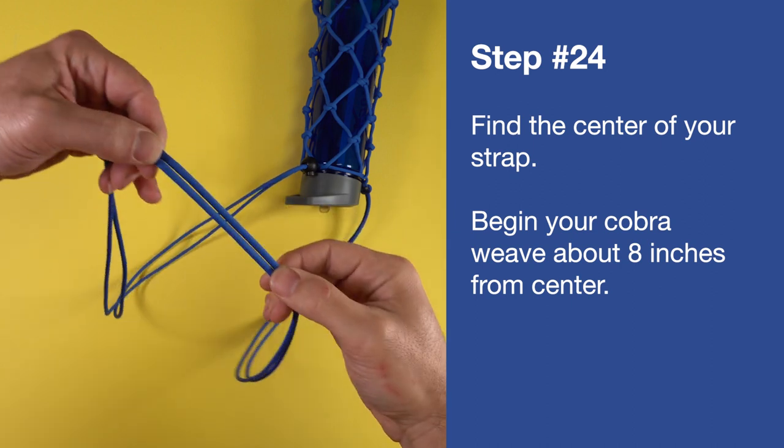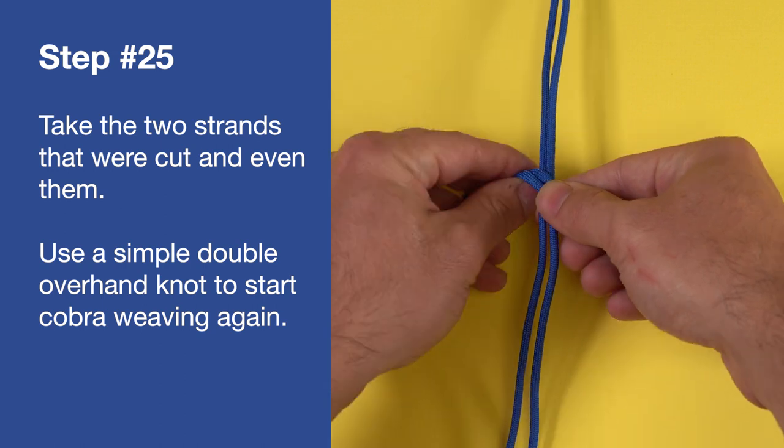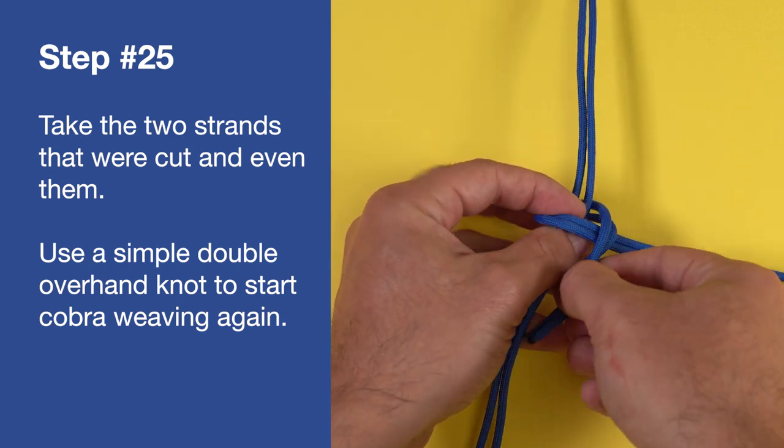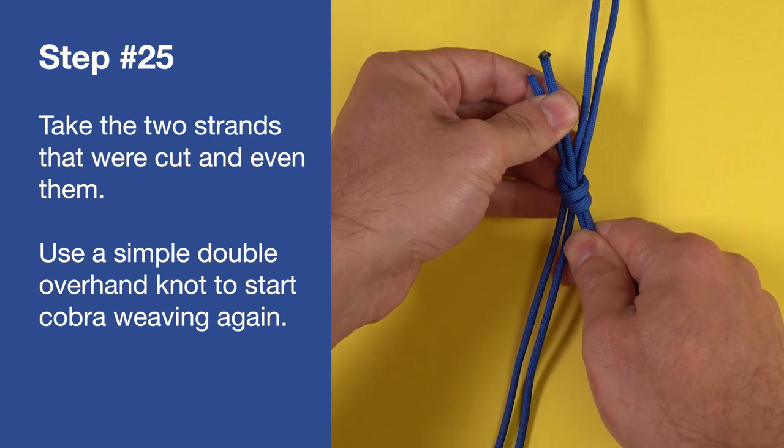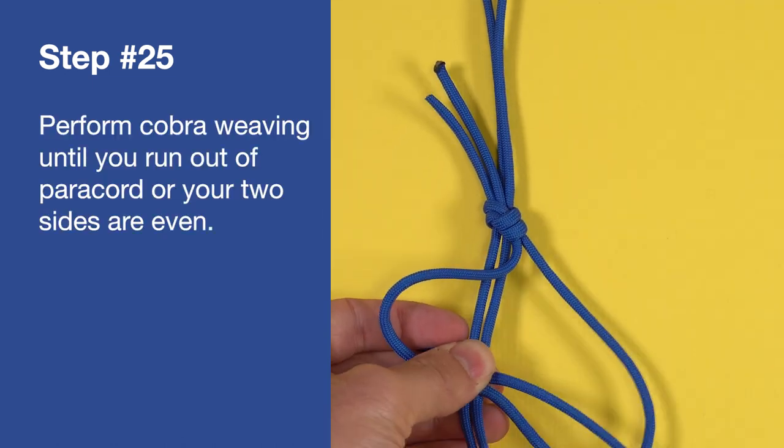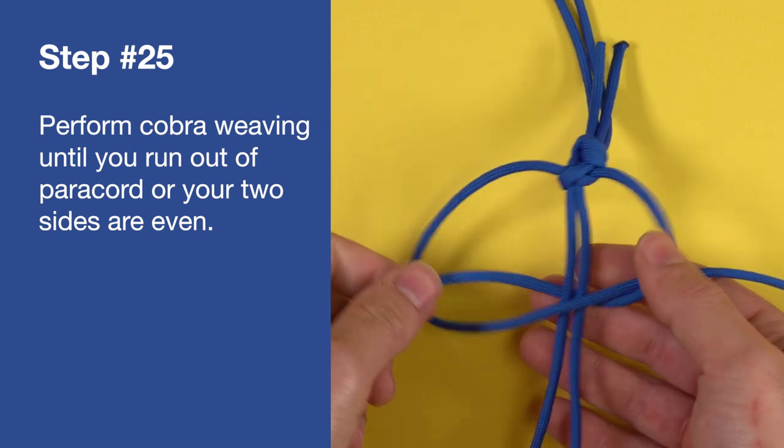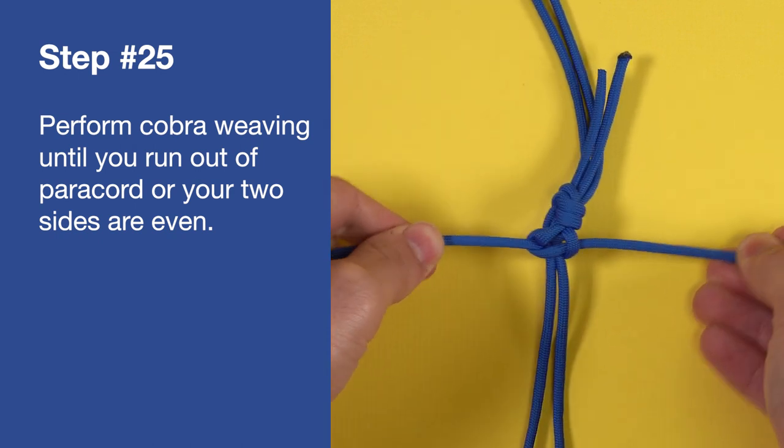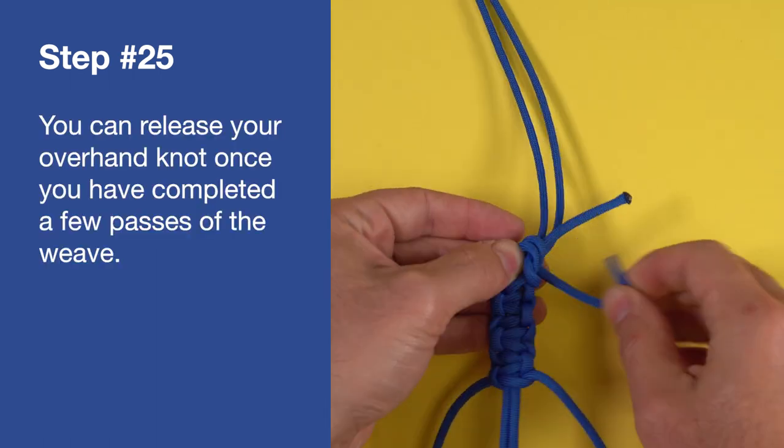Now find the center of your strap. Begin your cobra weave about eight inches from the center. Take the two strands that were cut and even them. Use a simple double overhand knot to start cobra weaving again. Perform cobra weaving until you run out of paracord, or your two sides are even. You can release your overhand knot once you have completed a few passes of the weave.